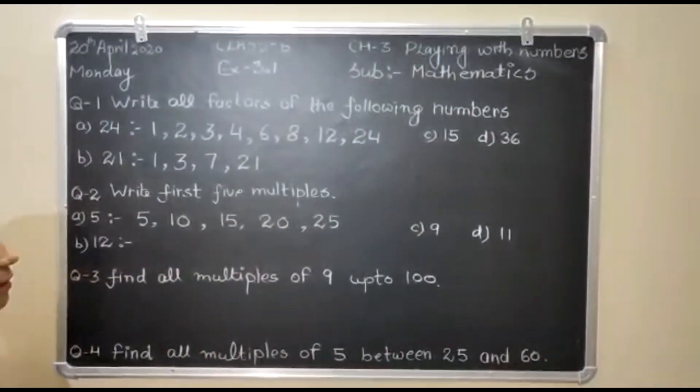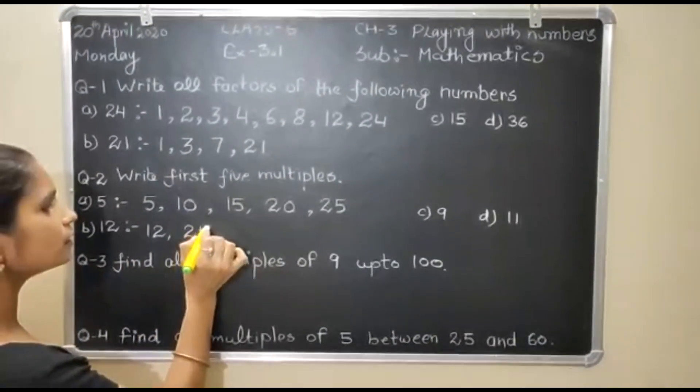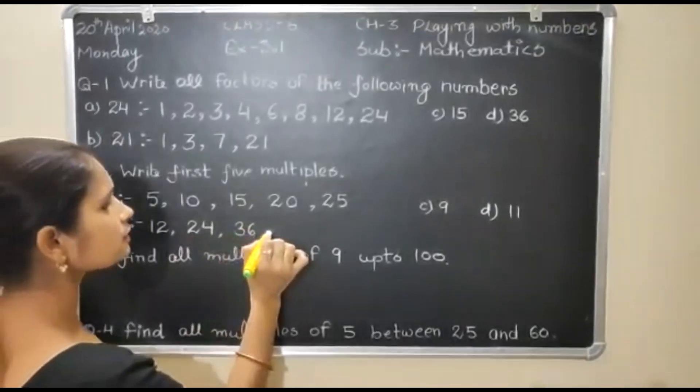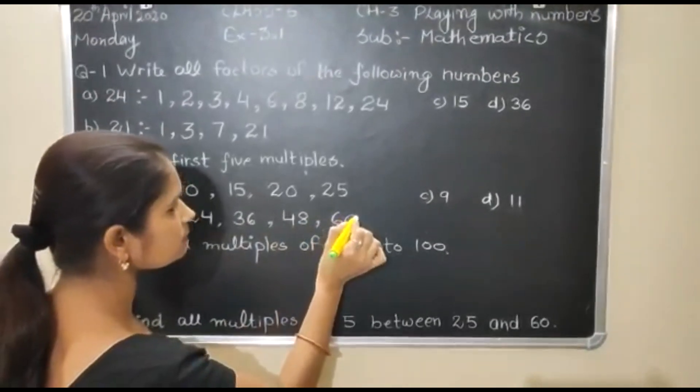Next number is 12. 12 ones are 12, 12 twos are 24, 12 threes are 36, 12 fours are 48, 12 fives are 60.